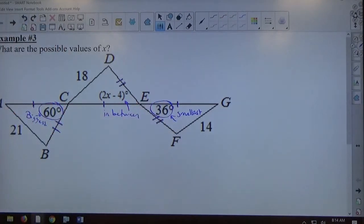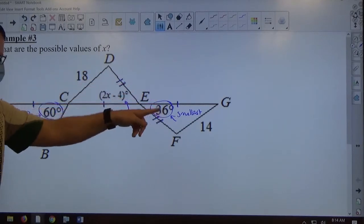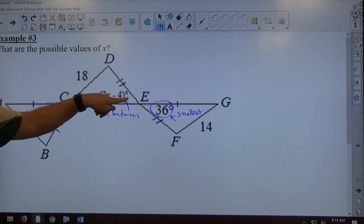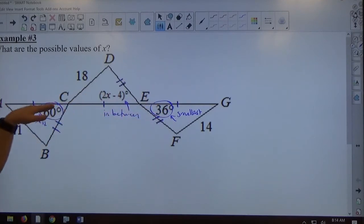All right, we're comparing angles. But again, since 18 is in between 14 and 21, this angle measure, angle DEC has to be in between 36 and 60.